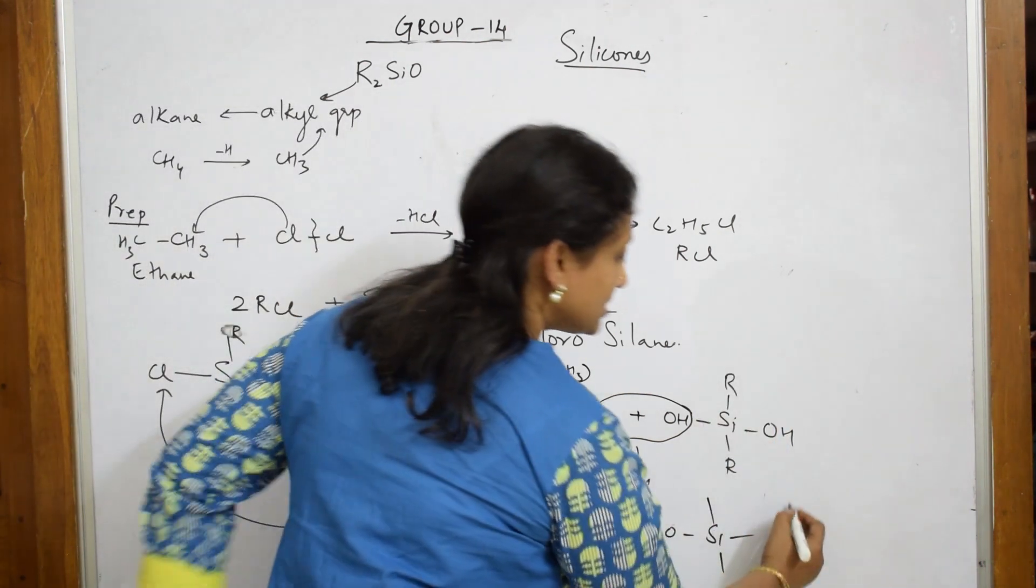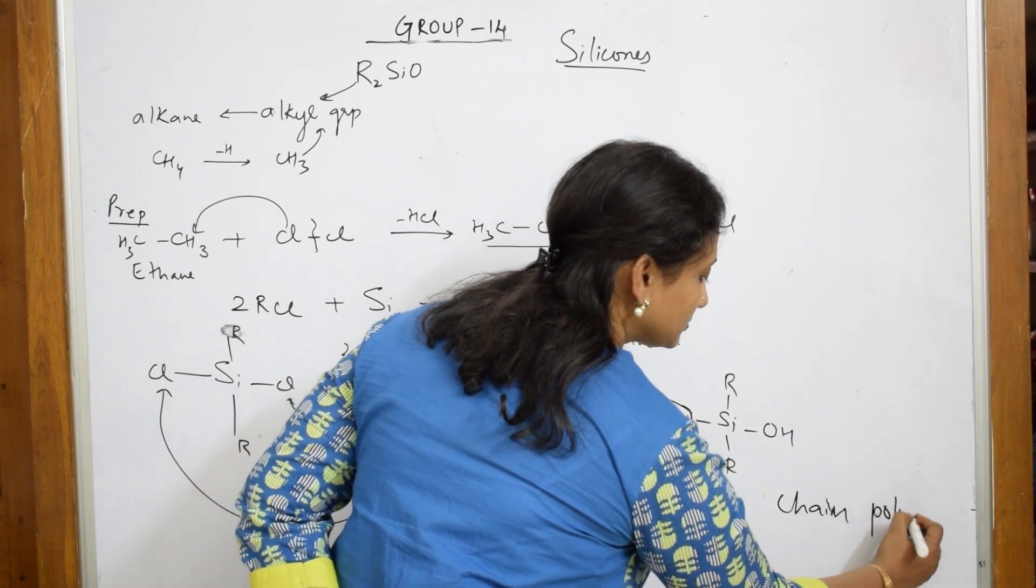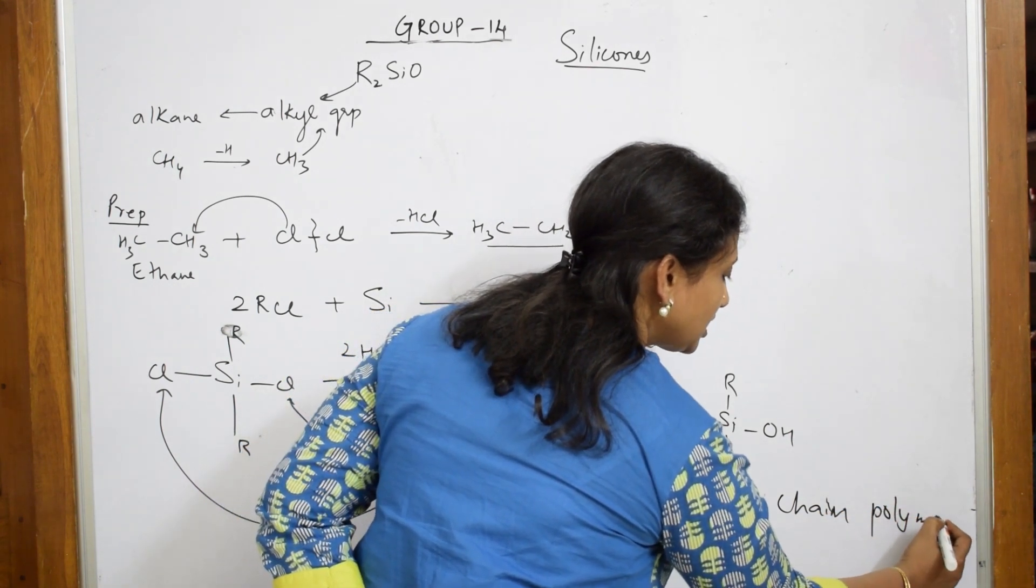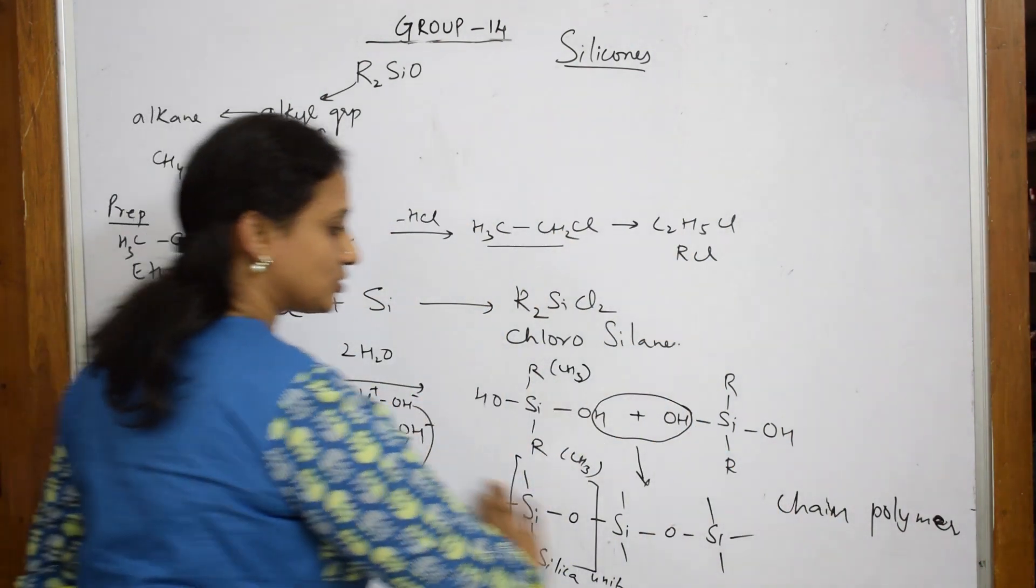Now, this goes on like this and hence, it is called a chain polymer. Chain polymer. Polymer means poly means many, mer means units. A chain, it goes on like a chain.